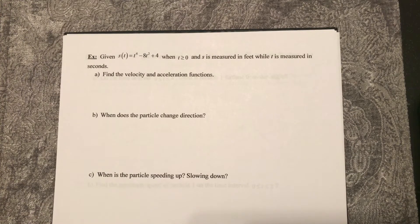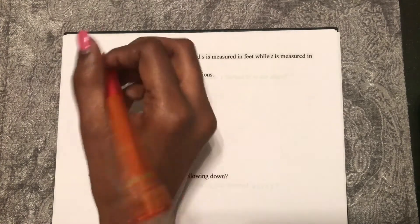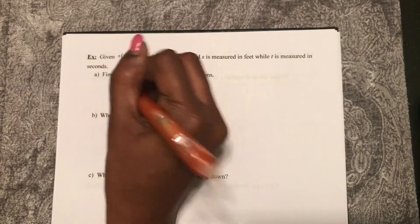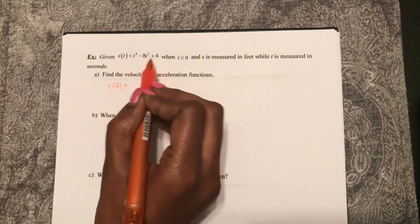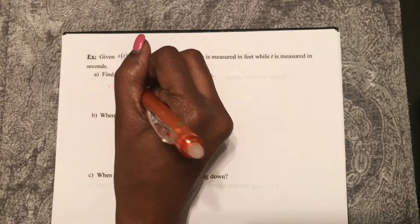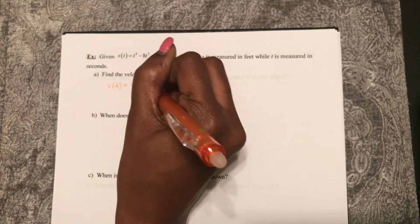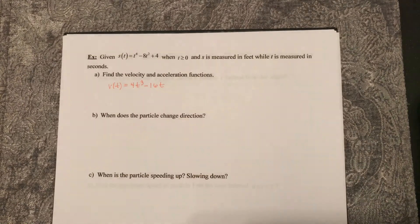So remember, velocity is the rate of change of your position. So v of t is the derivative of this position function, 4t cubed minus 16t.